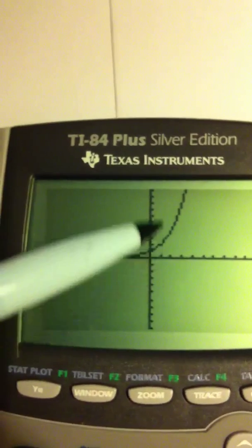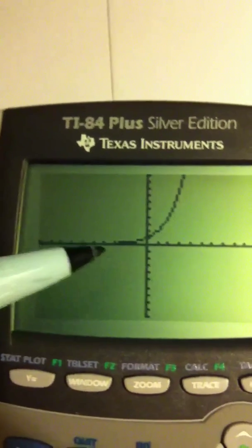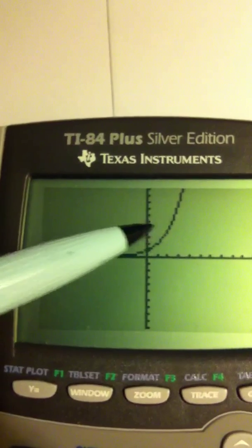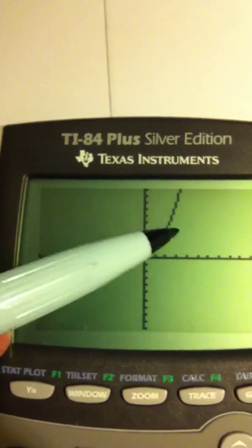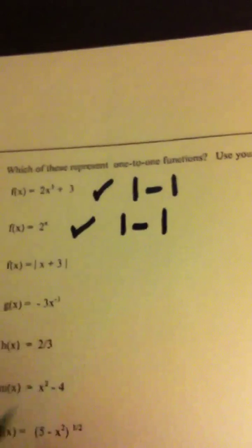If you draw a vertical line, it only crosses the graph one time. That means it's a function, which we already knew. But, the important one is to draw the horizontal line. And when you draw a horizontal line, it only crosses the graph one time. So, that means that, yes, this is also a one-to-one function.